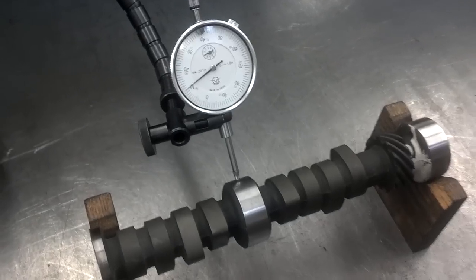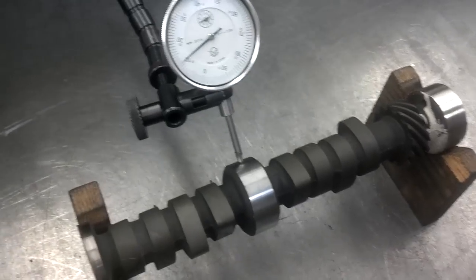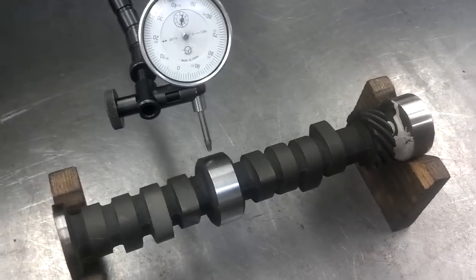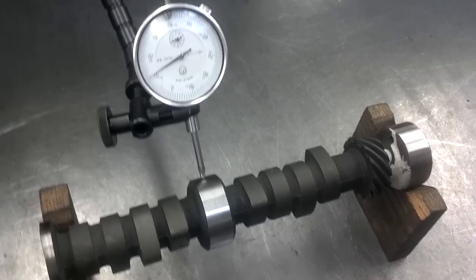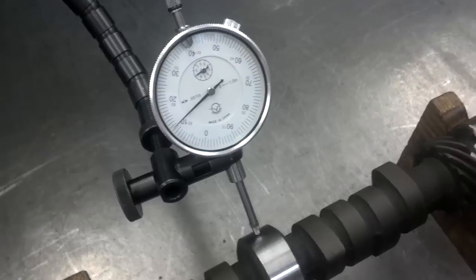To begin with, we've set up a dial indicator so that it's resting on the journal. This is just part of a camshaft, but you would always put it on the center journal of the camshaft. And then zero the dial indicator.